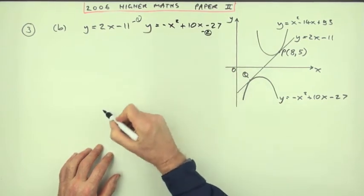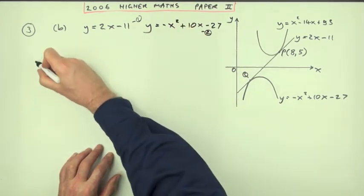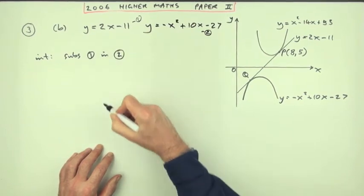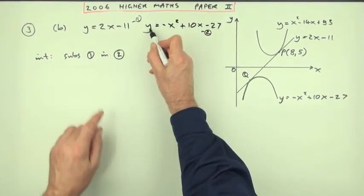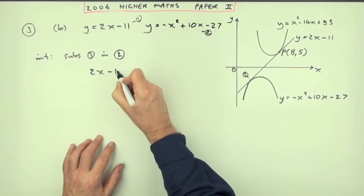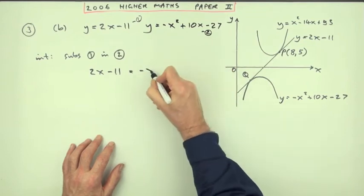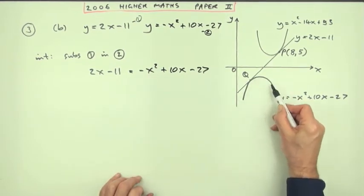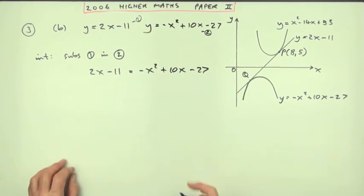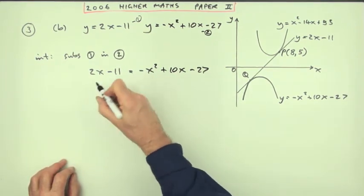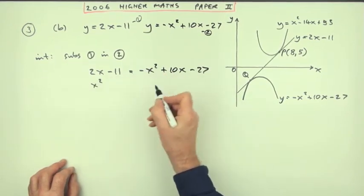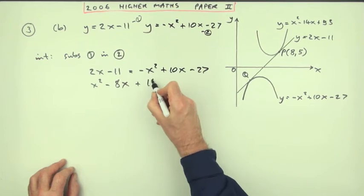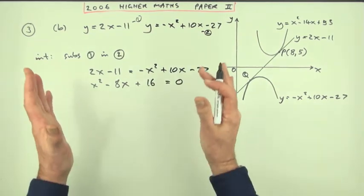If I call the line equation one and the curve equation two, I'll find intersections by substituting one into two. Where the curve reads y, I replace it with 2x minus 11. So: 2x minus 11 equals negative x squared plus 10x minus 27. Note it's a negative x squared because this parabola is upside down. Rearranging to form a quadratic: bring the x squared over, the 10x over giving minus 8x, bring the 27 over giving plus 27, and that's plus 16 equals zero.